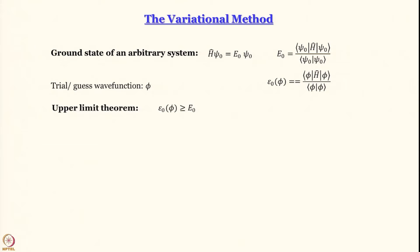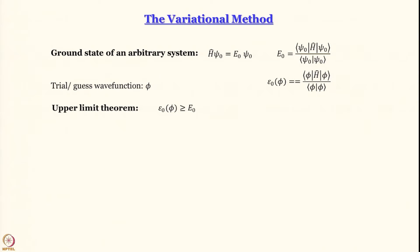What we have learned so far is the upper limit theorem, which says that no matter what trial or guess wave function you use, you can never reach the actual value of energy of the ground state — you approach it from the top. Remember what we are interested in is stabilization, meaning this energy is going to be negative E_0. You start from zero energy with no interaction and go towards it. You cannot synthesize a wave function such that the energy you get is less than the actual exact ground state energy — this is the upper limit theorem.